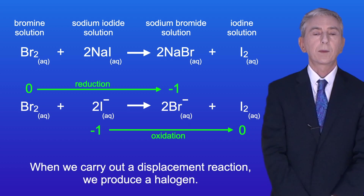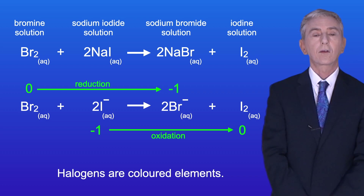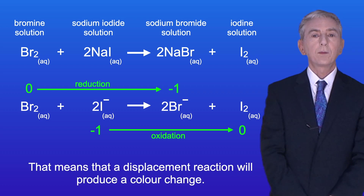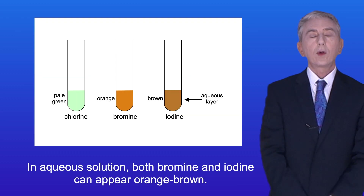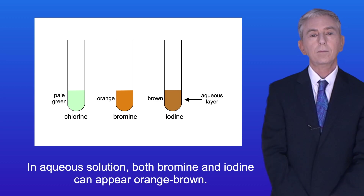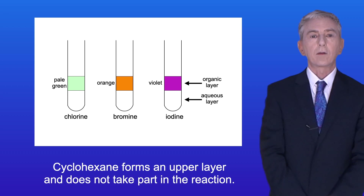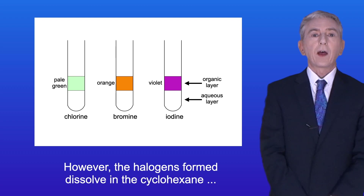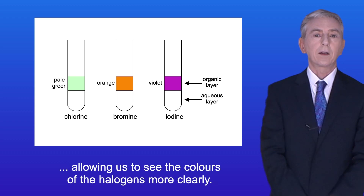When we carry out a displacement reaction we produce a halogen, and halogens are colored elements, so a displacement reaction will produce a color change. However there is a problem: in aqueous solution both bromine and iodine can appear orange-brown. To solve this we add a non-polar organic solvent, for example cyclohexane. Cyclohexane forms an upper layer and does not take part in the reaction, however the halogens formed dissolve in the cyclohexane allowing us to see the colors more clearly.